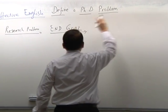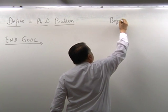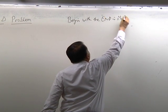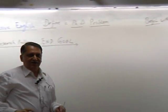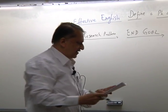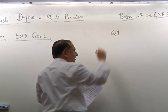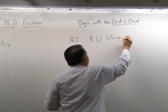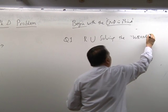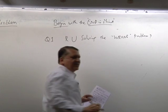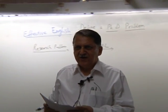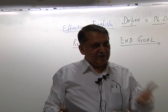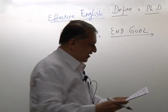We always come back to the title for the day: begin with the end in mind. So question one, when defining our top problem: are you solving the wrong problem? This is the biggest worry — you may do all the work and then in the end somebody will say that was not the right problem to solve, because there are things called the right problem and the wrong problem.